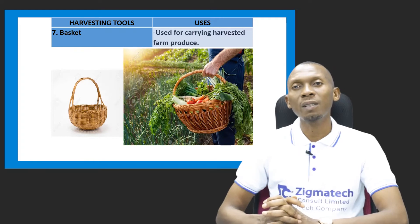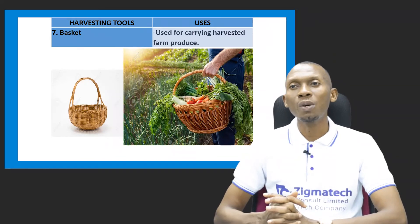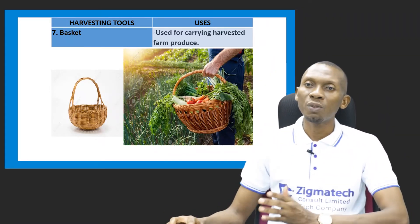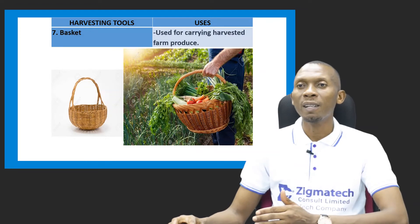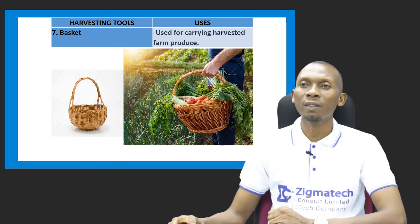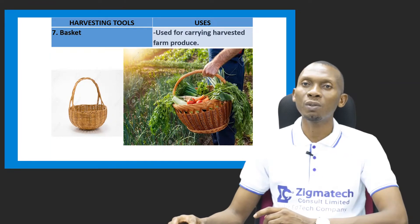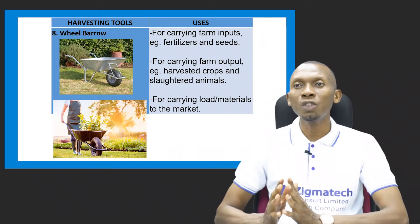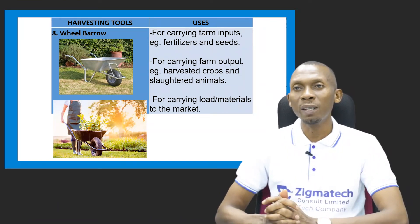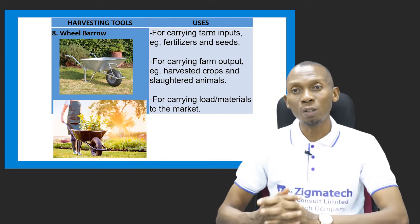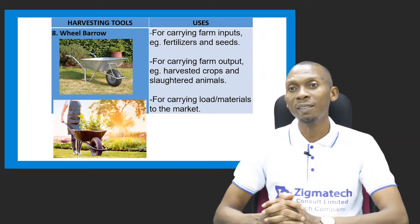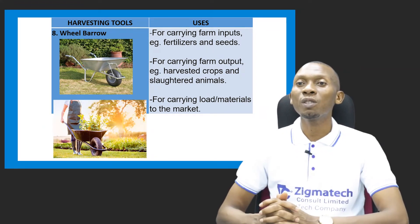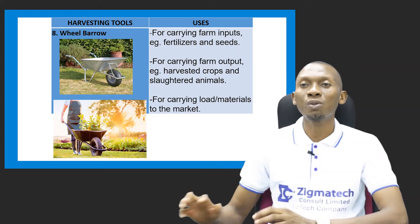We have the basket as another harvesting tool, used for carrying harvested farm produce. We also have the wheelbarrow as a harvesting tool, used for carrying farm inputs and outputs. It can also be used for carrying loads of materials to the market.